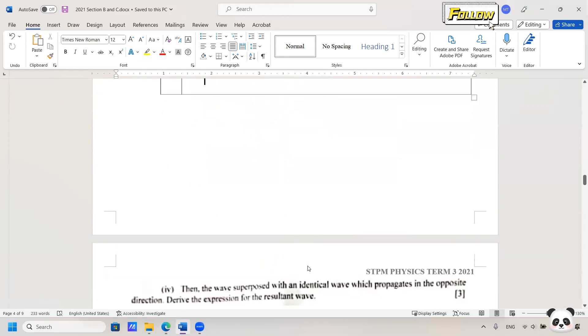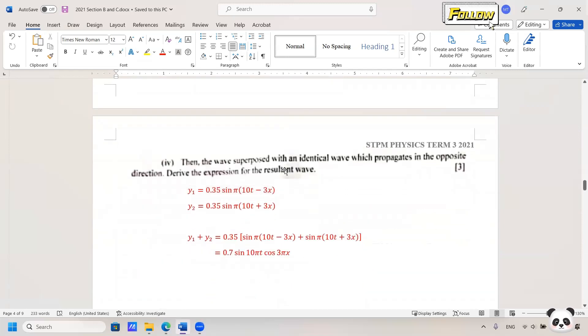We move on to the last one. Then the wave superposes with an identical wave which propagates in the opposite direction. When you read until this point, you should be able to identify that this is about standing wave. Standing wave is the superposition of waves that have identical amplitude but propagate in opposite directions. This has been discussed before in the syllabus and you should practice more about it.